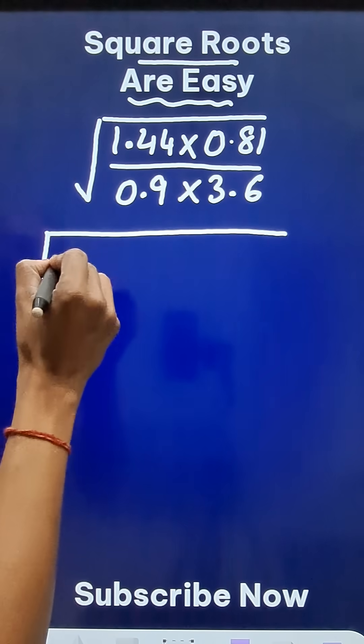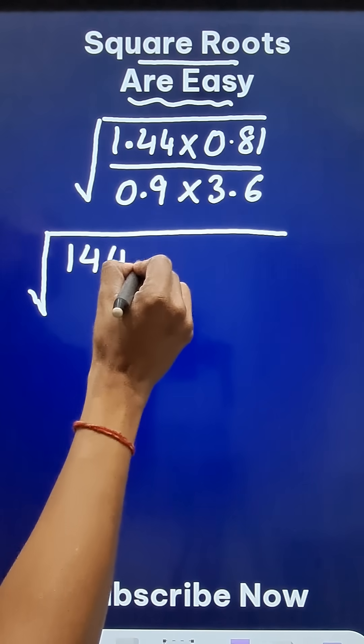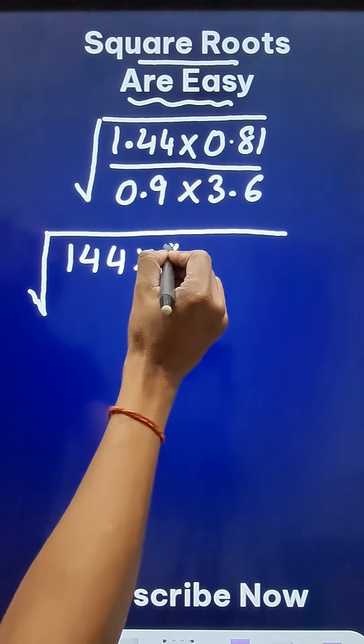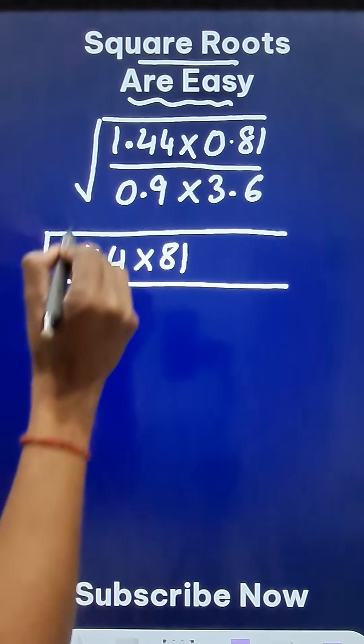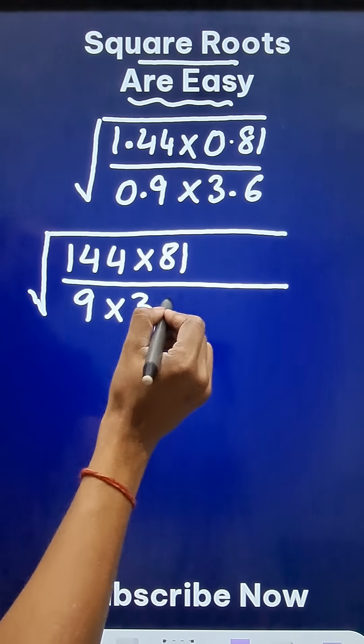Remove this decimal, it becomes 144. Remove this decimal, it becomes 81. Remove this decimal, it becomes 9. And remove this decimal, it becomes 36.